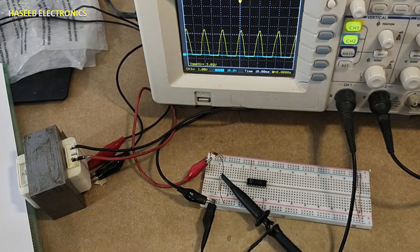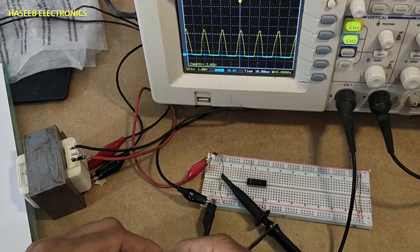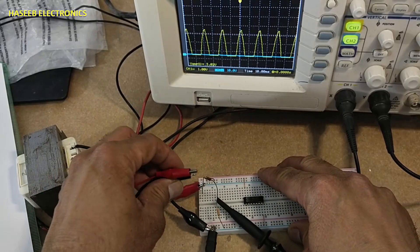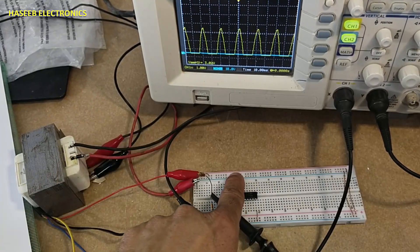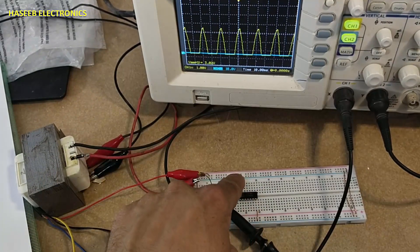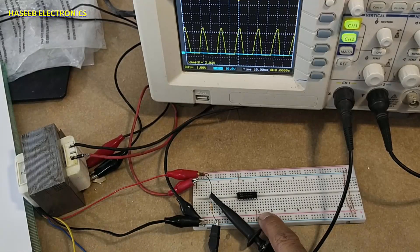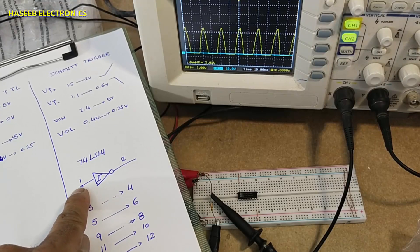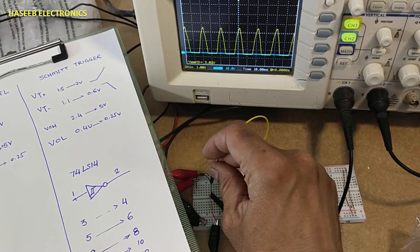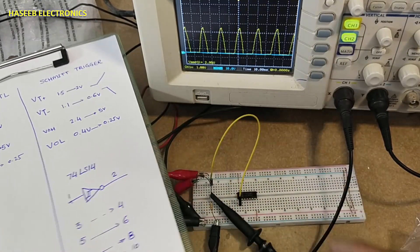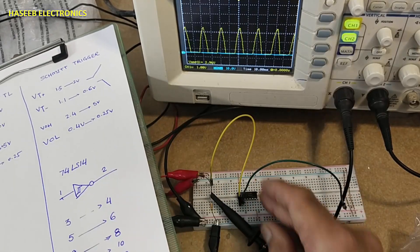Now I will apply 5 volts to pin number 14. I applied 5 volts to this IC pin number 14 positive, pin number 7 ground, pin number 1 that is input, and we will take output from pin number 2.